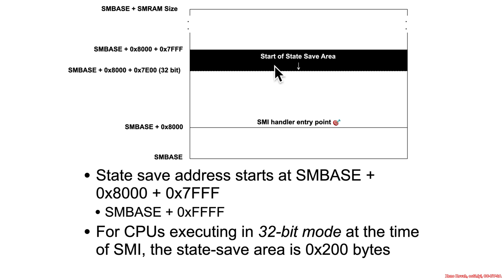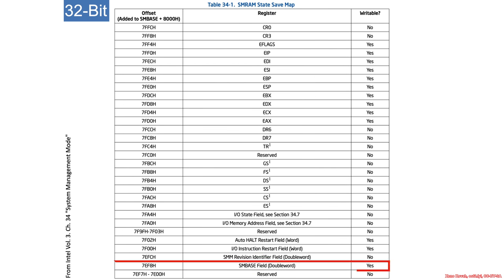If the processor was executing in 32-bit mode before the system management interrupt fired, then the information will range from there down, a total of hex 200 bytes. This describes what the save state looks like in terms of which registers are saved and in what order. An interesting thing to note is that SMBase itself is also saved to this save state.